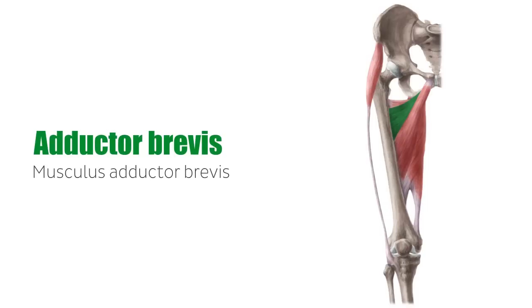The adductor brevis, or musculus adductor brevis, is one of the adductors of the hip. The adductors are part of the inner hip musculature and range from the lower pelvic bone to the femur and knee region. This group of muscles lies in between the extensor and flexor group of the thigh muscles. The hip adductors shape the surface anatomy of the medial thigh.